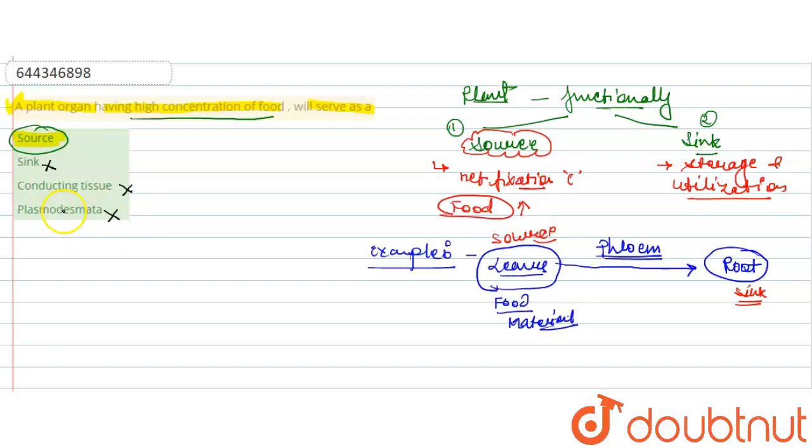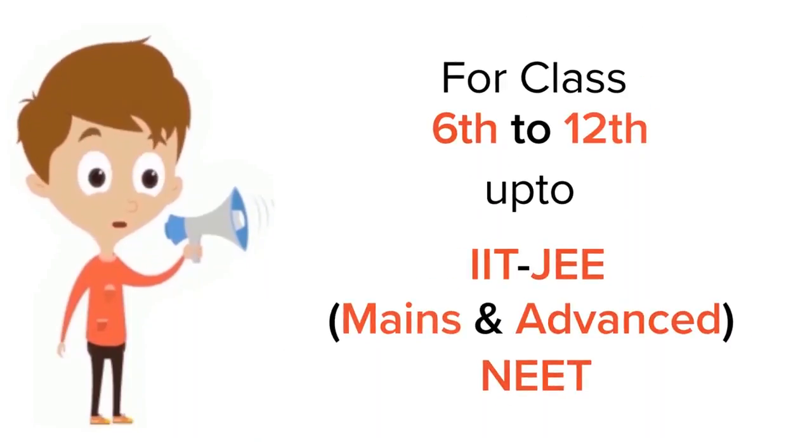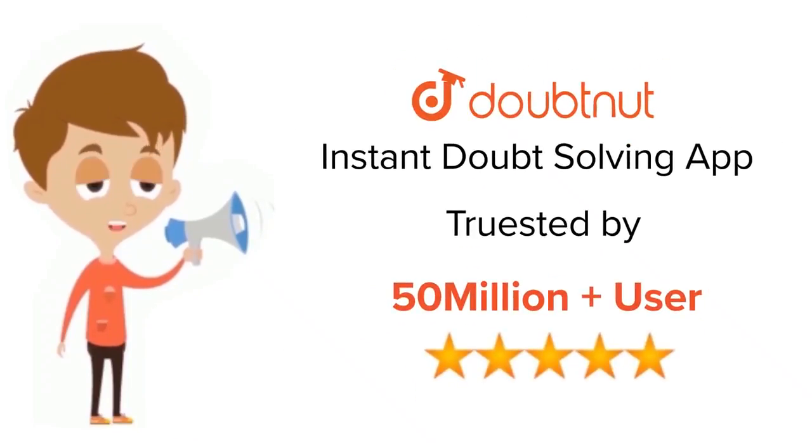Sink will be incorrect, conducting tissue also incorrect, plasmodesmata is also incorrect. In these structures the food material is not present in high concentration, so these all are incorrect. The correct answer is option A. Thank you.